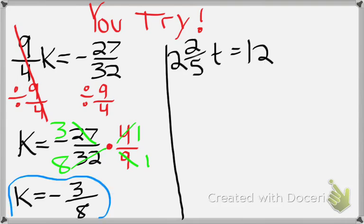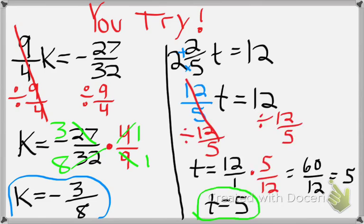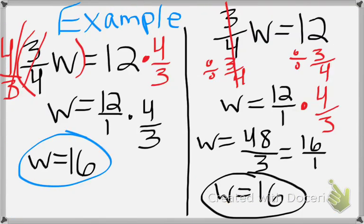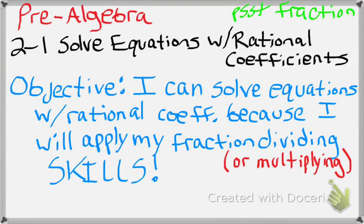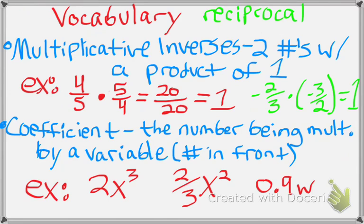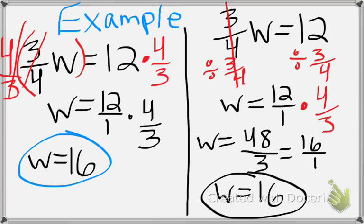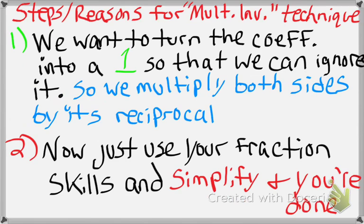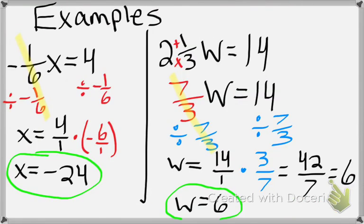Give this last one a shot — press pause. In that last example, make sure you understand what you had to do: turn the mixed number coefficient into an improper fraction, then do everything else as before. You're welcome to jump to that second step where you automatically multiply both sides by the reciprocal.